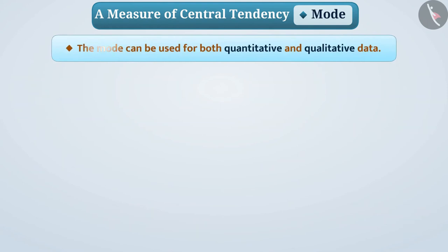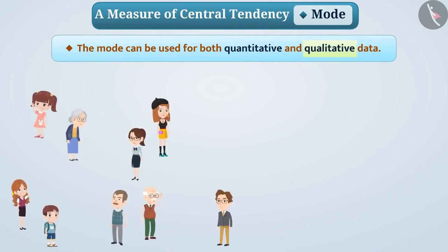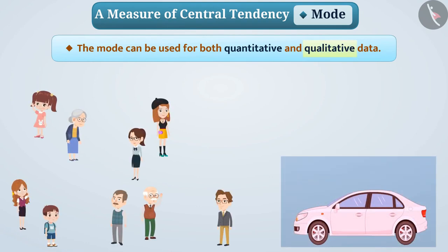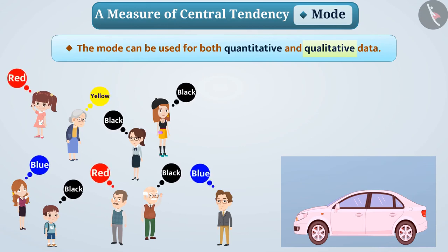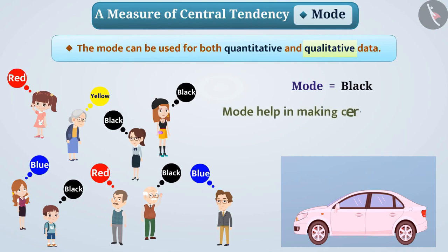The mode can be used for both quantitative and qualitative data. We have seen examples of quantitative data. For qualitative data, suppose a family wants to buy a car. The opinions of family members regarding the color of the car are given. Their mode is black color, so mode helps in making decisions related to the color of the car.